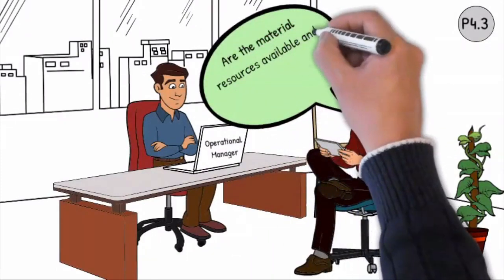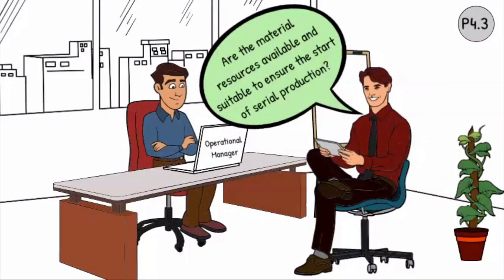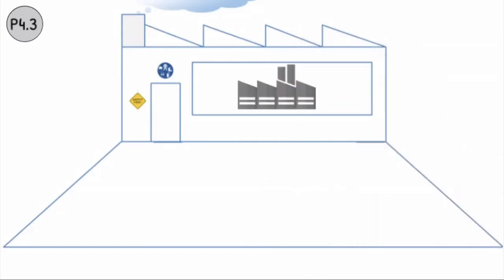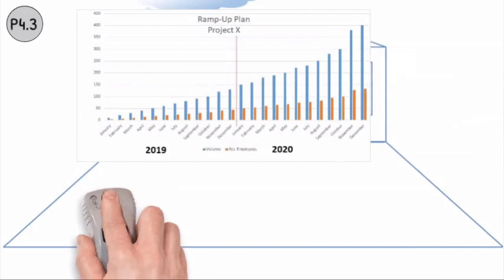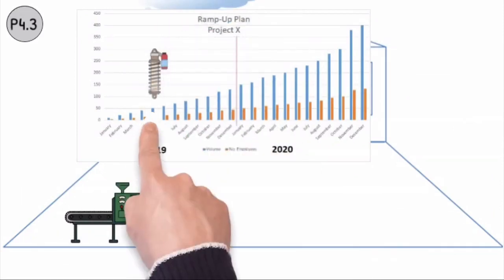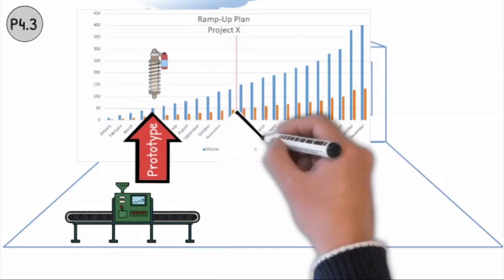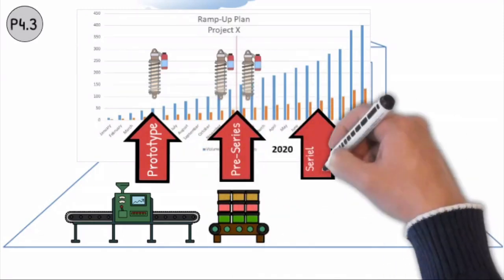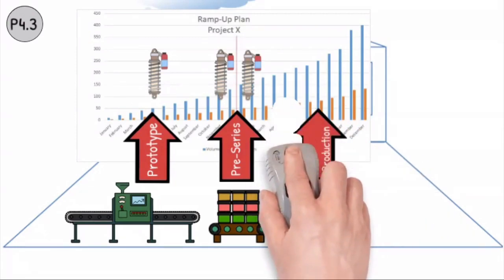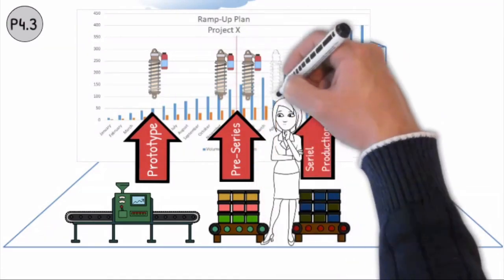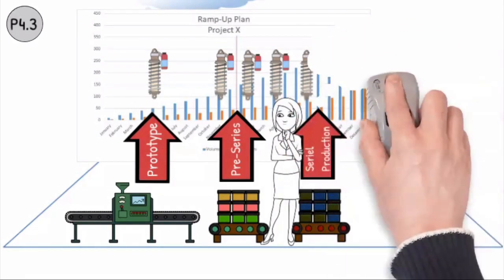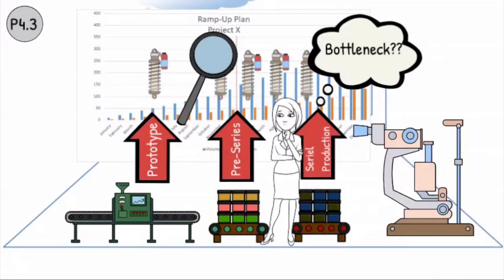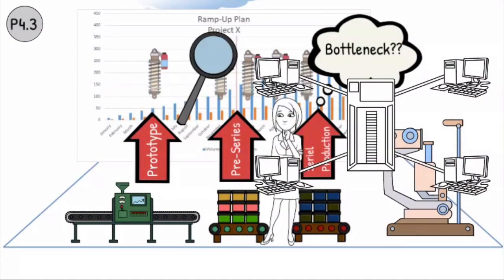Needs assessments are required to ensure the start of serial production. Within the equipment resource determination, the necessary infrastructure is taken into account. Needs assessments are carried out regularly during product and process applications. All the necessary equipment for the realization of prototypes and samples is available. All the equipment for pre-production and serial production is implemented and released according to the project plan. Regular needs assessments are carried out during product and process development with regard to possible emerging bottlenecks and additional requirements. The necessary test equipment and laboratory equipment are available and capable. All supporting processes from logistics and IT will be implemented.